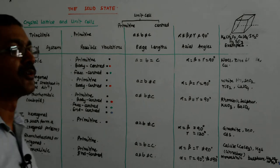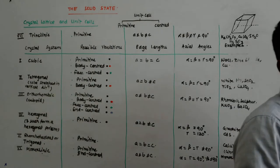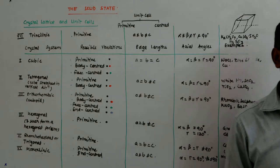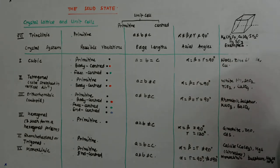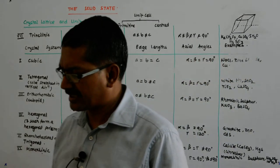These are the 14 kinds of Bravais lattice. We can separately draw them if you wish, but they are helpful many times.